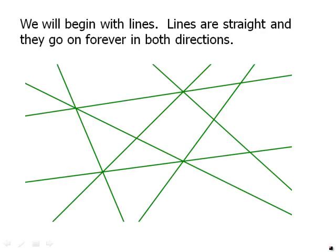So let's start with lines. Lines are straight and they go on forever in both directions. So here we have a bunch of different straight lines in a bunch of different directions. You have to imagine that at the end of each line, there are some arrows or something like that to indicate that the lines actually do go on forever in both directions.